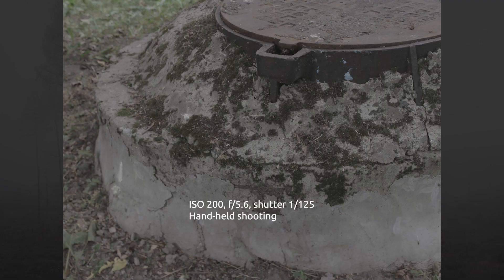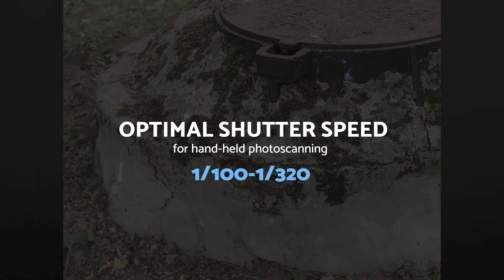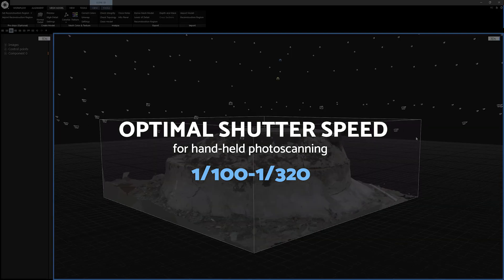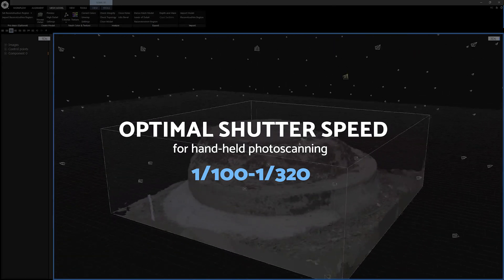Returning to our handheld scanning example, the shutter speed should be pretty fast to avoid motion blur. It also depends on the focal length, but without going too deep into the weeds, the shutter speed for handheld shooting should be somewhere in this range shown here. It would be a pretty safe bet even for hands that are not super steady.